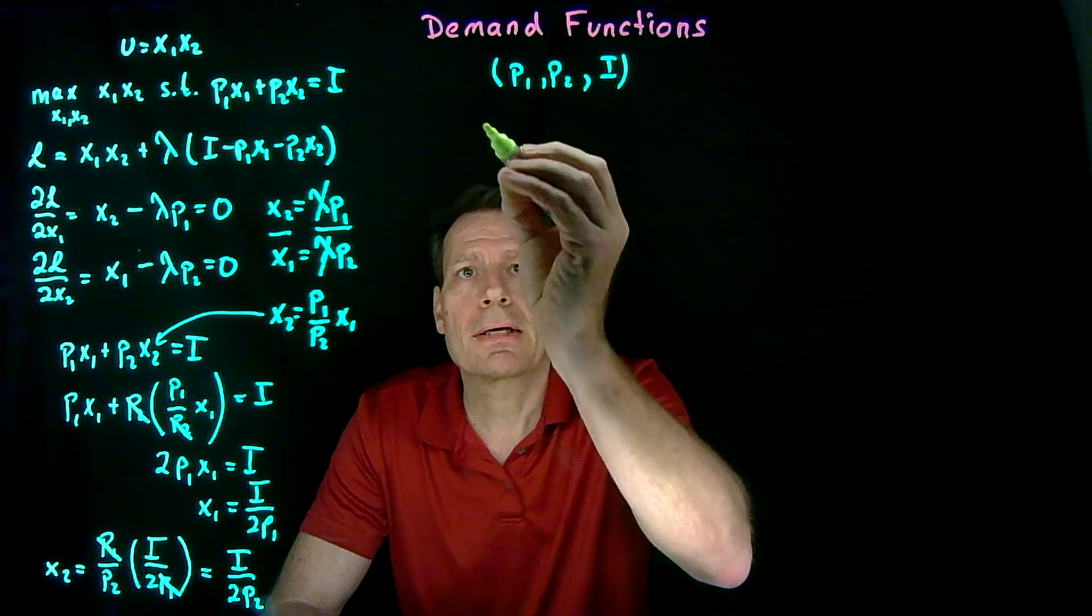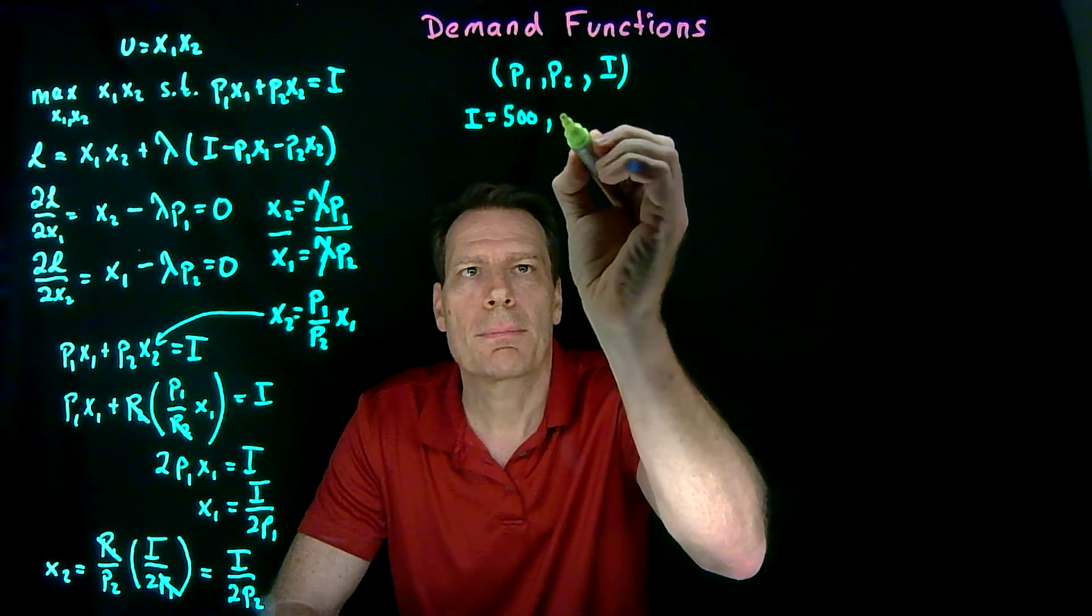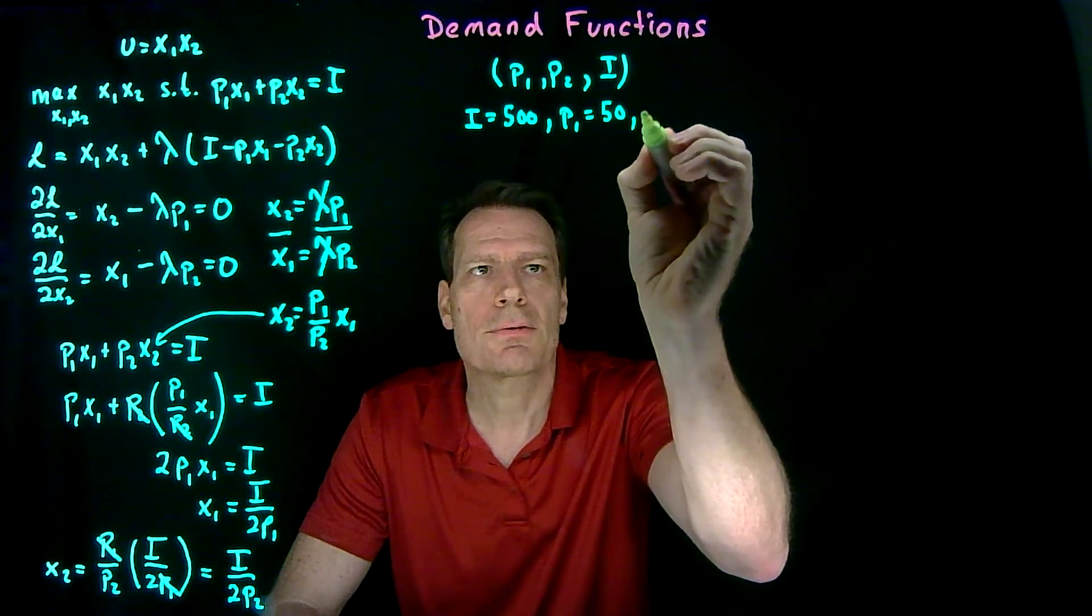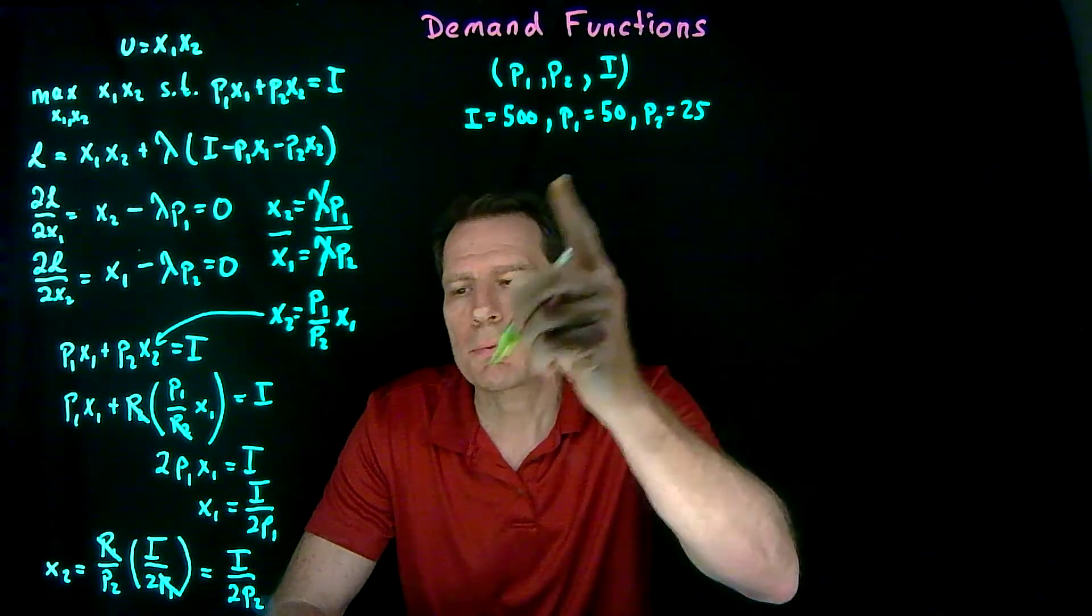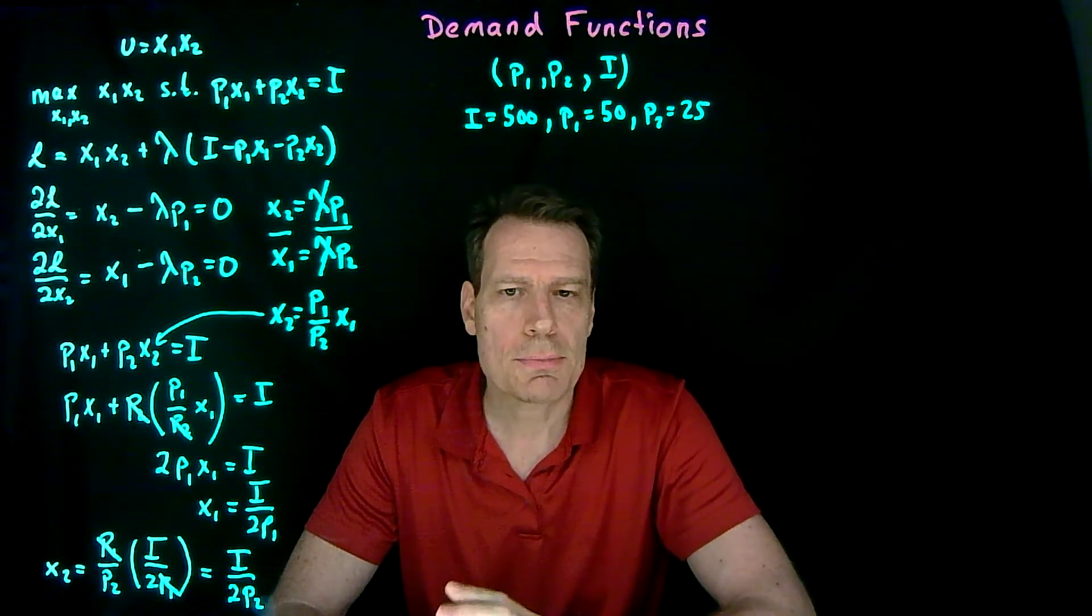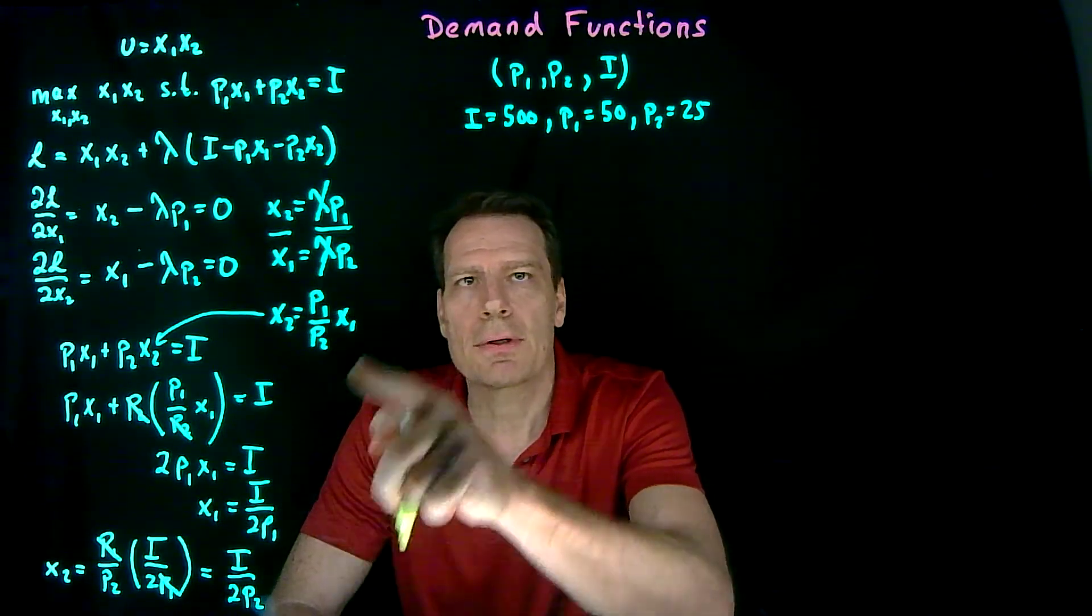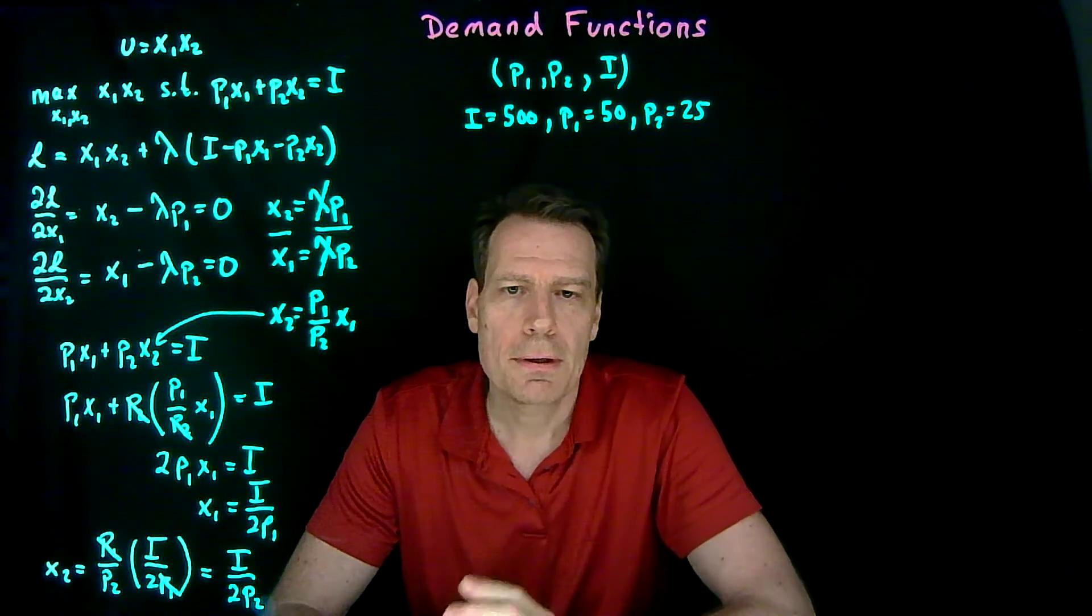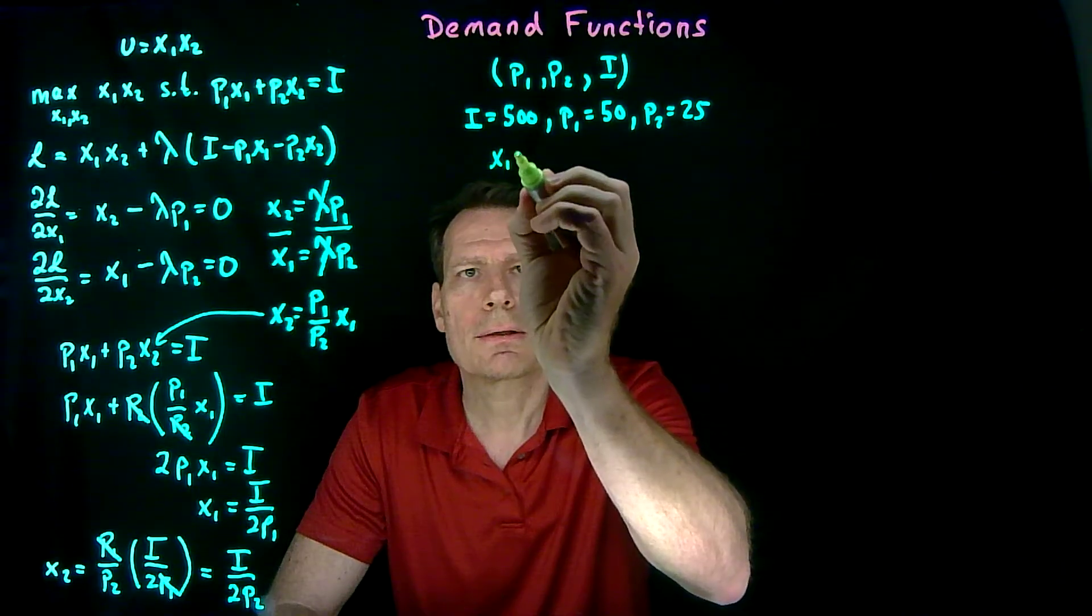For example, if we go back to our example where we had income equal to 500, the price of good 1 equal to 50, and the price of good 2 equal to 25, we would just substitute these in for i and the prices to get the optimal consumption bundle. For x1, we would get 500 divided by 2 times 50, which gives us x1 equal to 5.